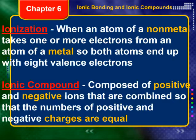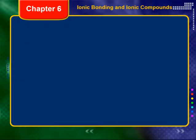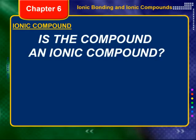An ionic compound is a compound that is composed of positive and negative ions, combined so that the numbers of positive and negative ions equal each other in charge. It doesn't mean the number of negative ions and the number of positive ions are the same — it means the overall charges have to be equal. They always have to be balanced in terms of their charge.